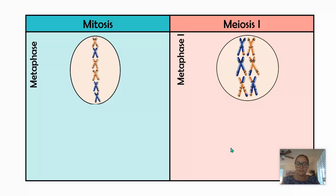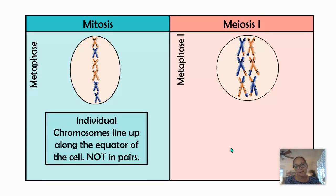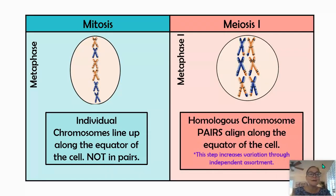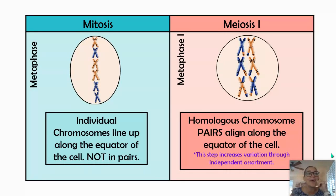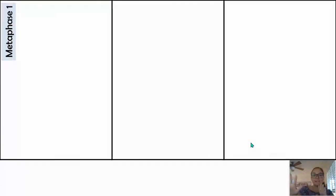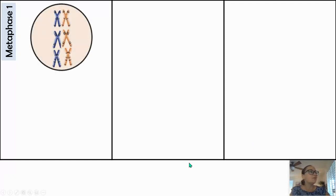In metaphase of mitosis, individual chromosomes line up along the equator. In metaphase one of meiosis one, homologous chromosomes pair up along the equator of the cell — and you can still see the recombinant chromosomes, the products of crossing over. This step increases variation in offspring. Let me explain why.